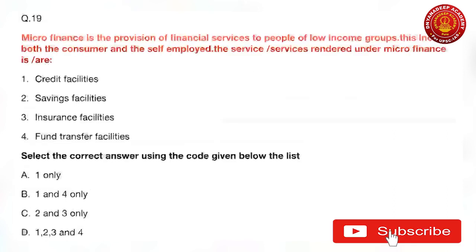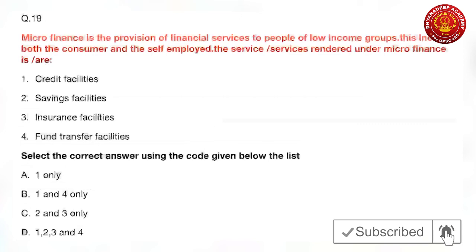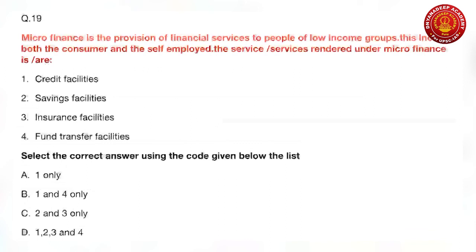Question 19 is about microfinance. Microfinance is the provision of financial services to people of low income groups, including both consumers and the self-employed. Services rendered under microfinance include credit facilities, saving facilities, insurance facilities, and fund transfer facilities. This is a straightforward question — the correct answer is one, two, three, and four.